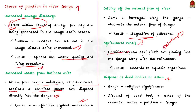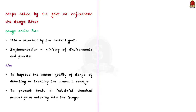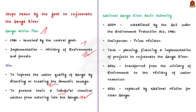Now we will see the steps taken by the government to rejuvenate the Ganga river. The first important step is the Ganga Action Plan. In 1986 the central government launched this plan, implemented by the Ministry of Environment and Forest. The main aim was to improve water quality of the Ganga by diverting or treating domestic sewage, and to prevent toxic and industrial chemical waste from entering the river. It was carried out in various phases across the Ganga basin states.